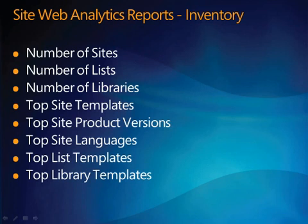For the inventory reports, number of sites shows a trended daily snapshot of the number of sites in your site collection. Number of lists shows a trended daily snapshot of the number of lists in your site collection. Number of libraries shows a trended daily snapshot of the number of libraries in your site collection. Top site templates shows the most popular site templates used to create sites in your site collection.